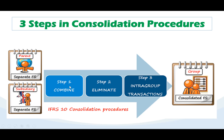So in the first step, the financial statements are combined, and the elimination entry is basically: the parent's investment in the subsidiary and the subsidiary's equity attributable to the parent are eliminated, and inter-group transactions are also eliminated.